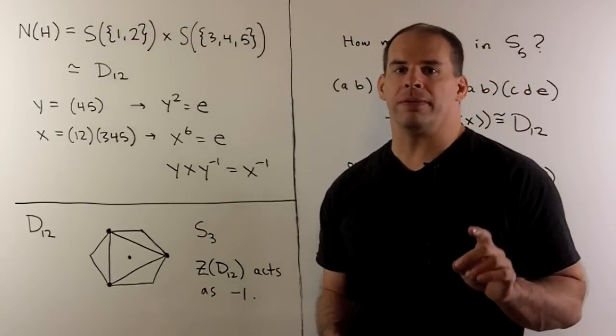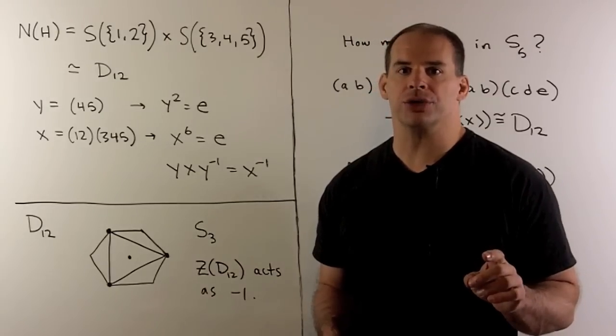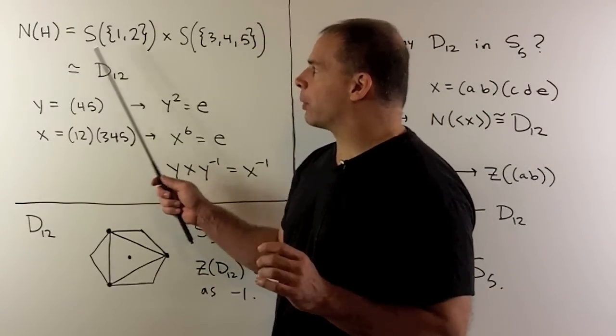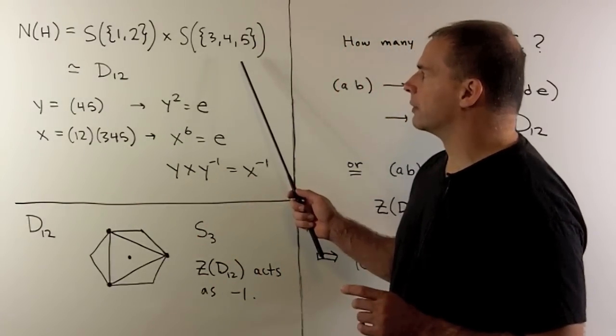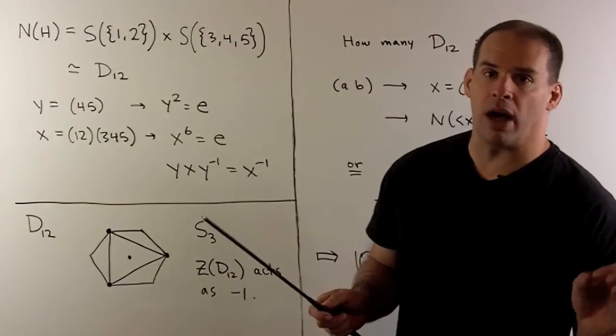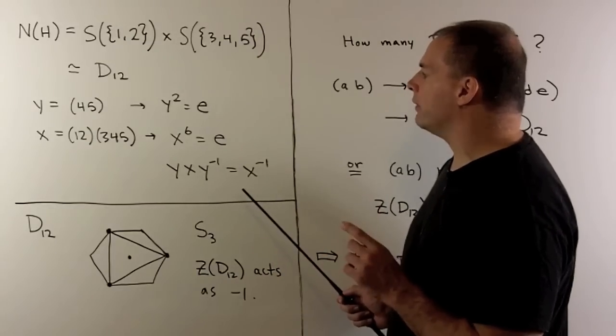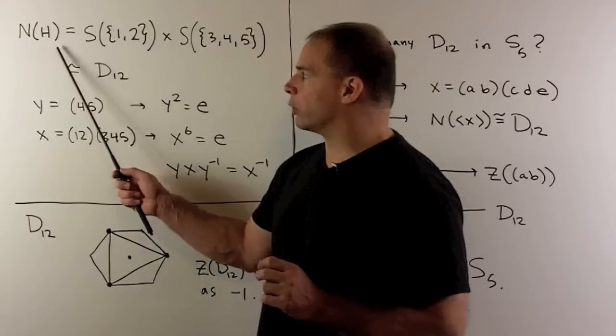The elements (4,5) and (3,4,5) generate a copy of S3, a symmetric group on three letters. So the normalizer of H is given as a product of a symmetric group on two letters with a symmetric group on three letters. This product has 12 elements. We found two elements that satisfy the relations for D12, so we have our D12 realized as the normalizer of our subgroup H.